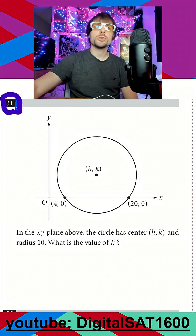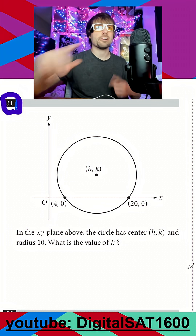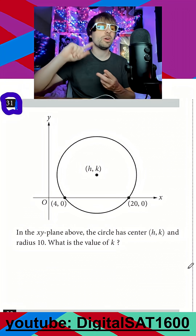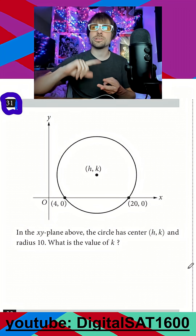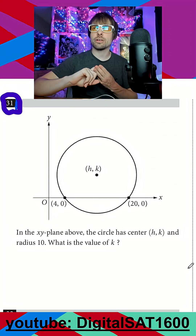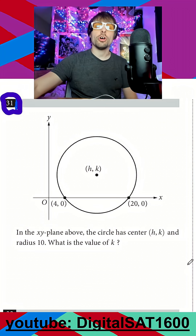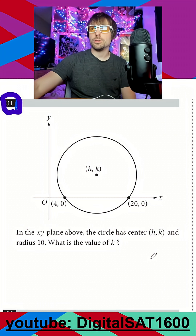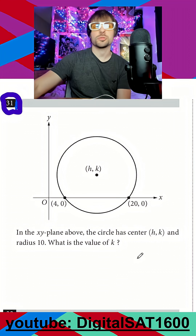Remember, in most two-dimensional geometry problems — it doesn't matter if it's a circle, a rectangle, or some odd quadrilateral — you're almost always drawing a right triangle. So a good goal to have in future problems.